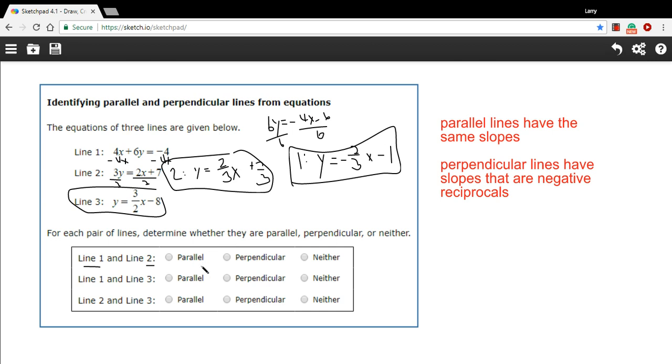Perpendicular slopes have negative reciprocal slopes. So it would be the fraction flipped upside down and made negative. This one is negative, but it's still 2 thirds. To be perpendicular, this would have to be a negative 3 halves to be perpendicular to 2 thirds.